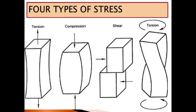Let's look at the four types of stress. The first one is tension — tension is like pulling both sides, a stretch. That is called tension. Compression is the opposite of tension — you are pressing from both sides, compressing. Something becomes compact when you are compressing. Then we have shear stress, which is like tearing or sliding — one block is going in the opposite direction.